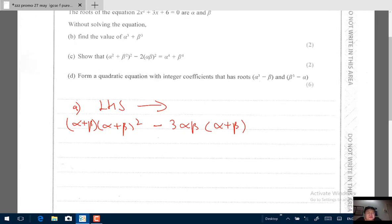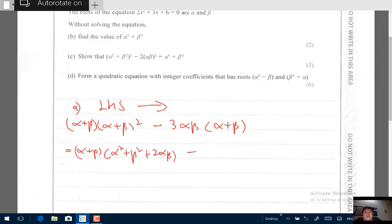From the left hand side you develop it until you get your answer. So I would have (α+β)(α+β)² where the bracket squared will be α² + β² + 2αβ minus 3α²β minus 3αβ². Be careful of the expansion, you have to be really careful.